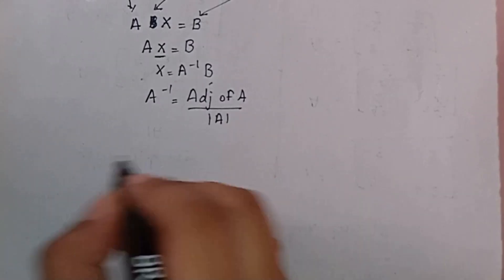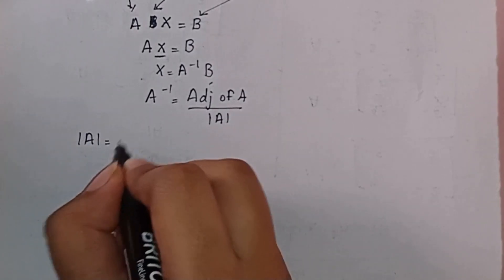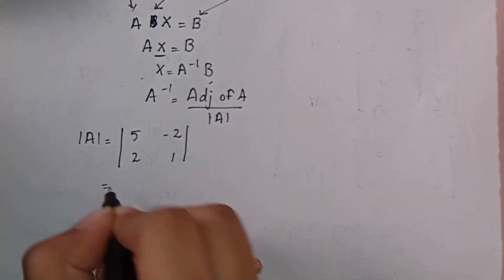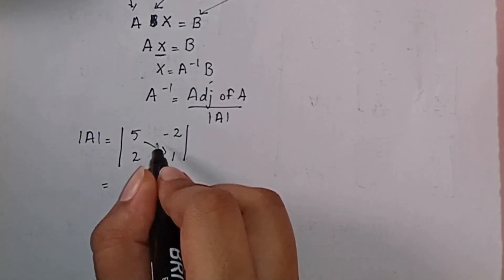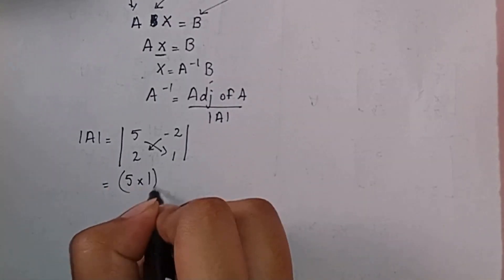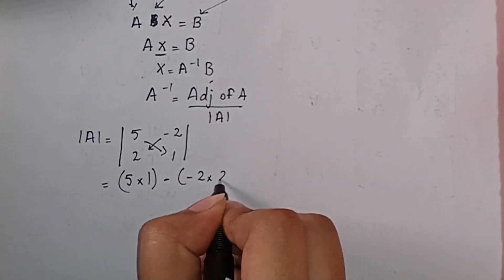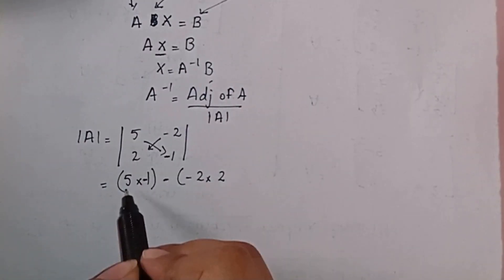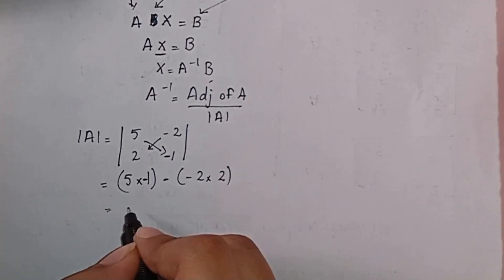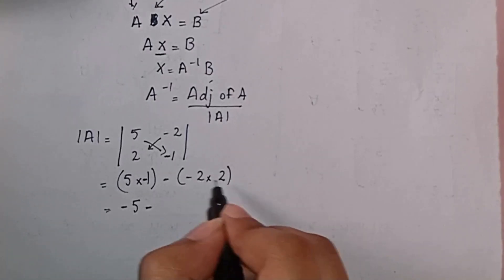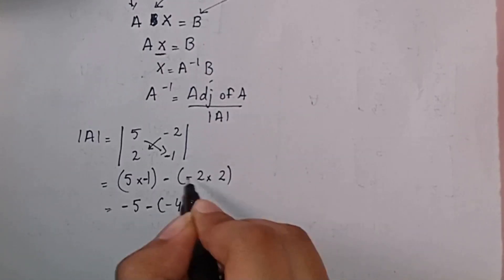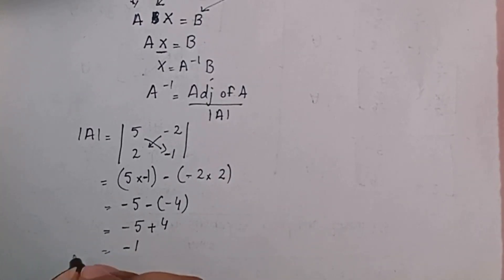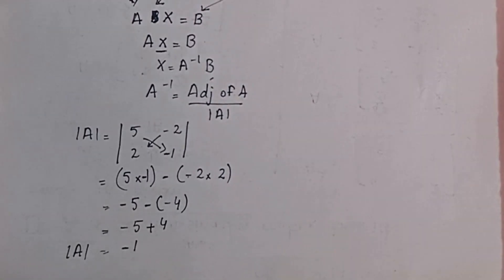So first we are going to find the determinant of A. Our matrix A is: 5, 2, -2, 1. To find the determinant, we multiply diagonally: 5 multiplied by 1, minus (-2 multiplied by 2). That gives us 5 times 1 = 5, minus (-2 times 2) = minus (-4), which is 5 minus (-4)... so minus 5 plus 4 = -1. The determinant of A is -1.